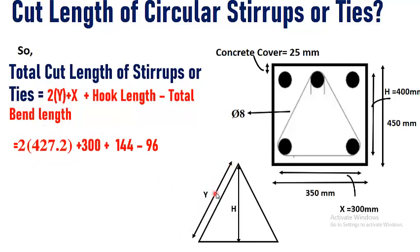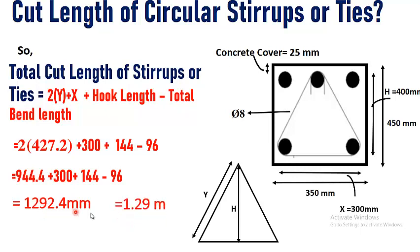By putting the values, that is 2 times 427.2 plus 300 plus hook length which we have calculated in the previous slide, minus total bend deduction which comes out to be 96. And by simplifying the value we will get 1292.4 mm, which is equal to 1.29 meters.